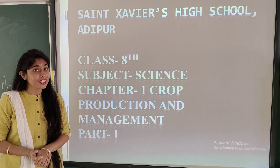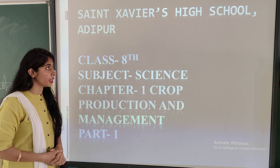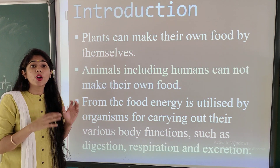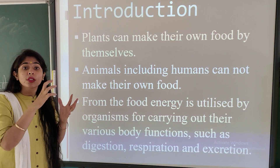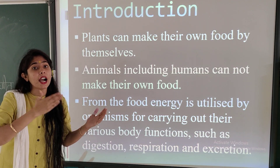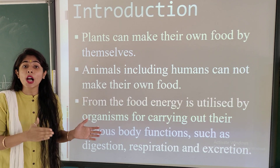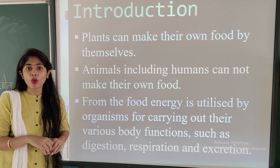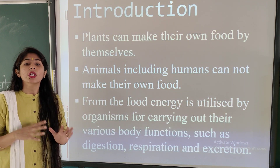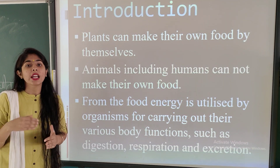Let us study about the first chapter of this session of science, that is crop production and its management. In this chapter, we will study what is a crop, how we identify which plant is a crop, what type of production is happening, in which season it is happening, how the crops are formed and grown, and how these will be managed and supplied to the consumer.